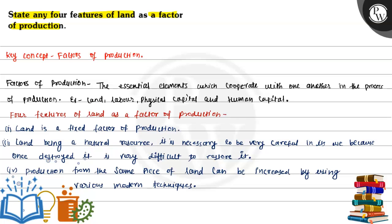The key concept is factors of production. What are factors of production? They are the essential elements which cooperate with one another in the process of production. Examples include land, labor, physical capital, and human capital.